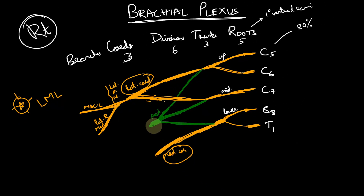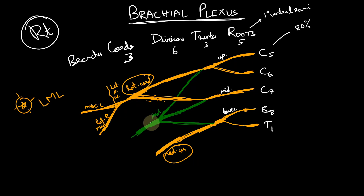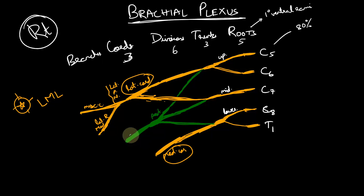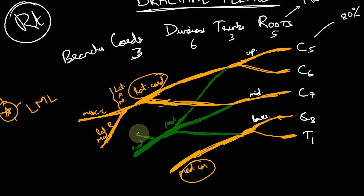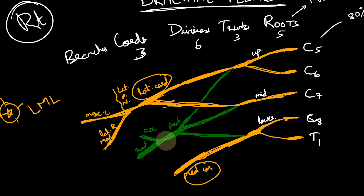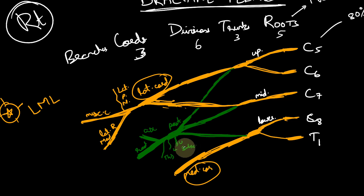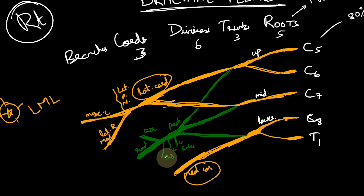The posterior cord gives off two main terminal branches: the radial nerve and the axillary nerve. There are also smaller branches: the upper subscapular nerve, the lower subscapular nerve — both supplying the subscapularis muscle — and the thoracodorsal nerve, which supplies the latissimus dorsi muscle. These five branches can be remembered with the mnemonic ULTRA: Upper subscapular, Lower subscapular, Thoracodorsal, Radial, and Axillary.